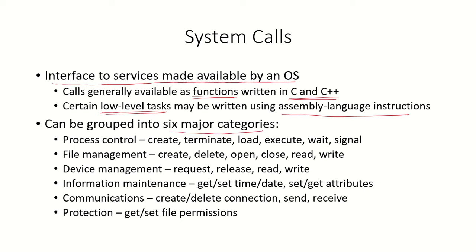System calls can be grouped into six major categories: process control (creating, terminating, loading, executing, waiting, and signaling a process); file management (creation, deletion, opening, closing, reading, and writing of files); device management (requesting or releasing a device, and read/write of the device); information maintenance (get or set time, date, or attributes); communication (creating or deleting a connection, sending and receiving messages); and protection (get or set file permissions). We will look at system calls in more detail in successive videos.